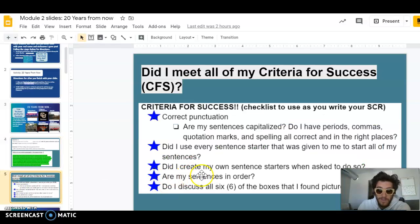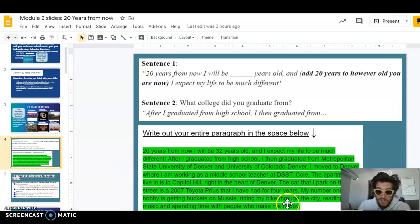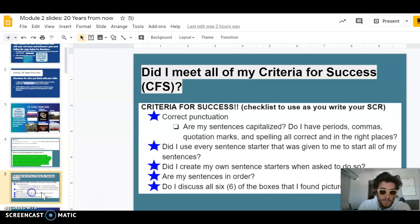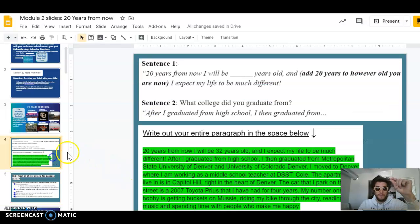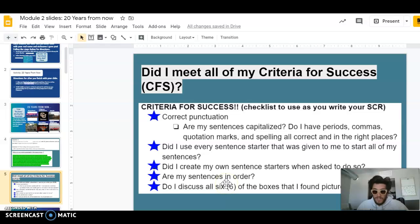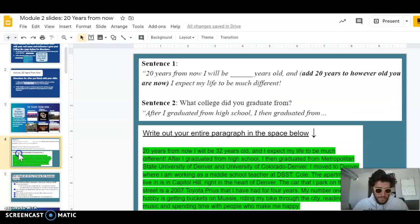Third, did I create my own sentence starters when asked to do so? Questions five and six, you'll have to do that. Are my sentences in order? Sentence one, sentence two—you'll see all the other sentences mapped out for you. It's up to you to create an entire thorough paragraph on your own. And did you discuss all six of the boxes you found pictures for? I did do that.